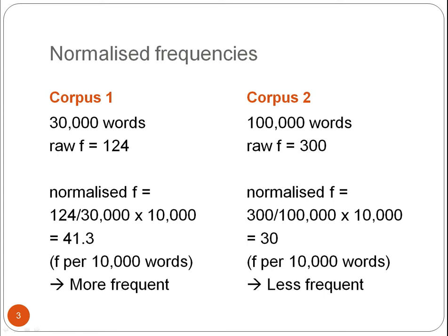If corpus 2 has 100,000 words and the raw frequency of the word 'season' is 300, the normalised frequency then is 300 divided by 100,000 times 10,000, which is 30 — so the frequency here is 30 times per 10,000 words. So we can see that in fact the word is more frequent in corpus 1 and less frequent in corpus 2, even though corpus 1 has the lower raw frequency.